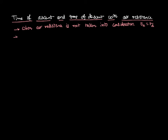But if air resistance is taken into consideration — air resistance is nothing but a force which can be written as MA, where M is the mass of the body — we need to know that it always acts against the motion. If this air resistance is taken into consideration, the time of ascent is going to be different from the time of descent.